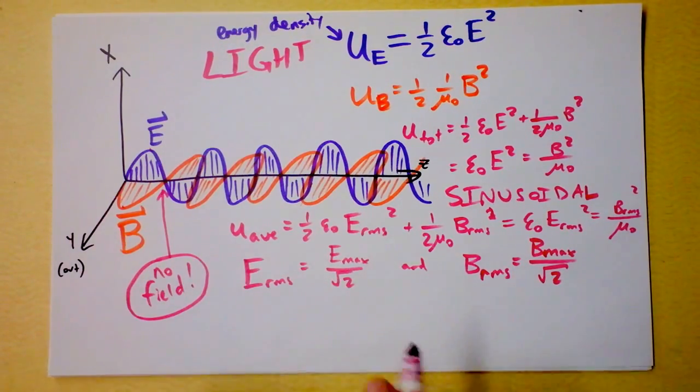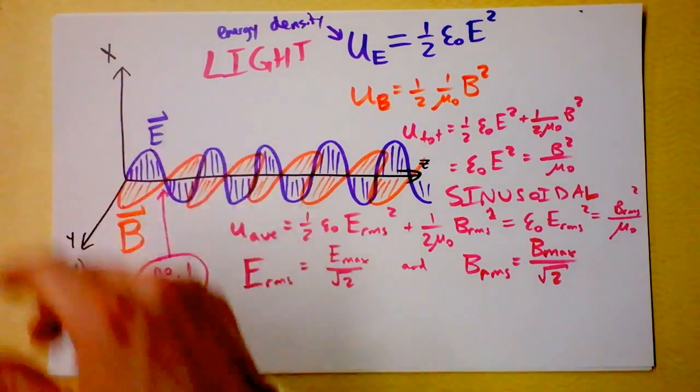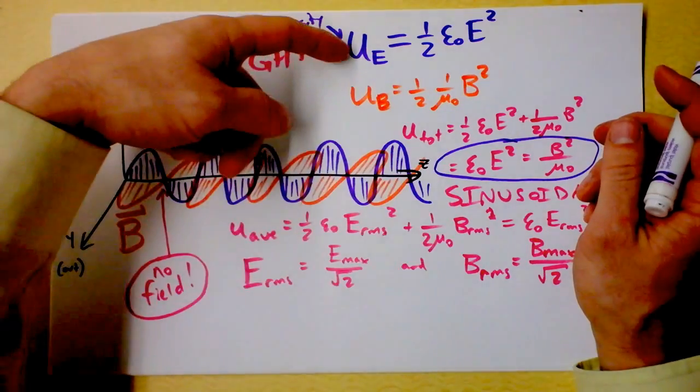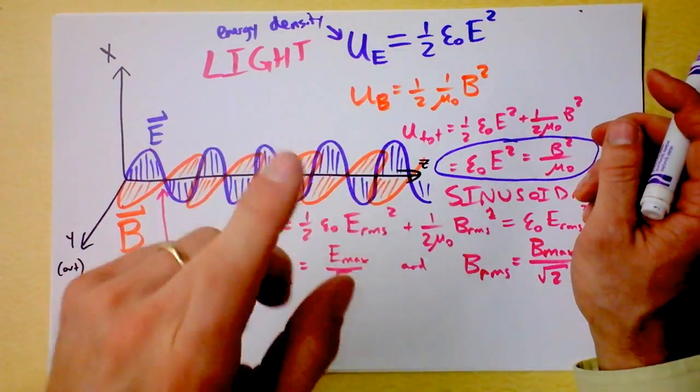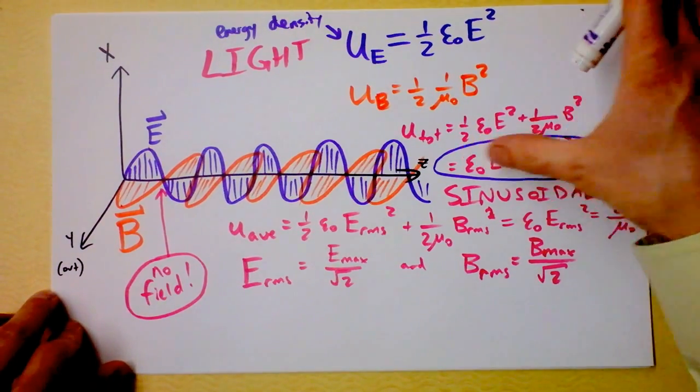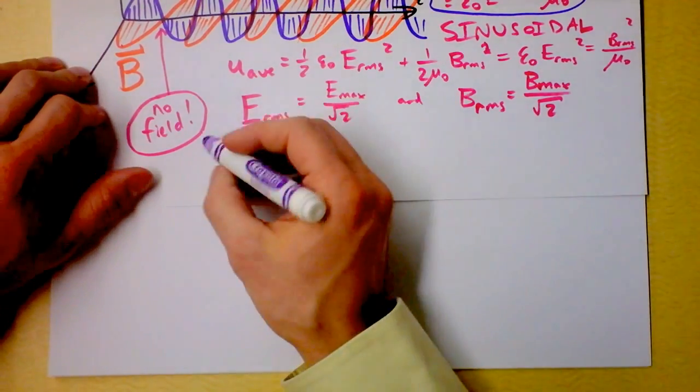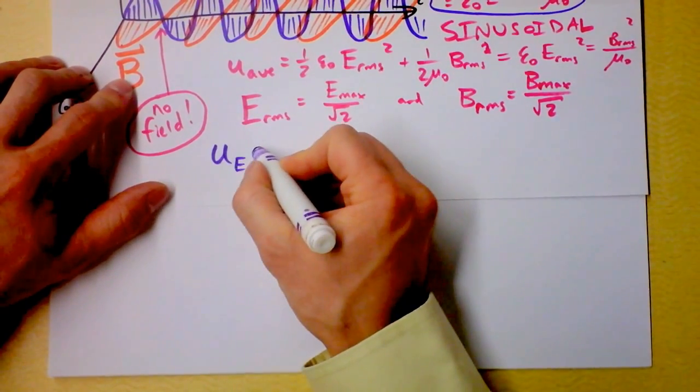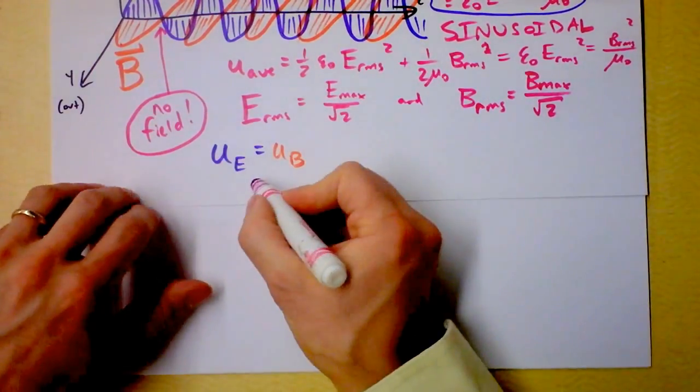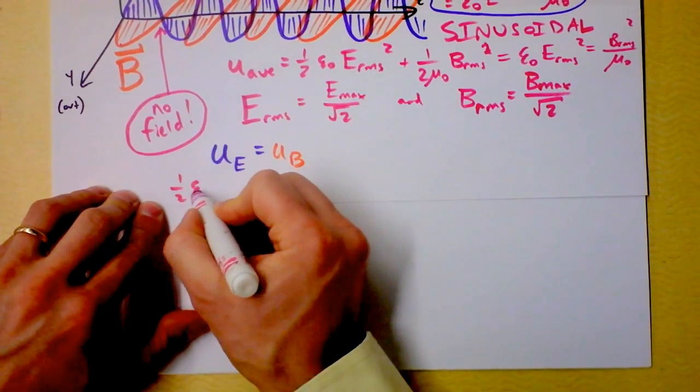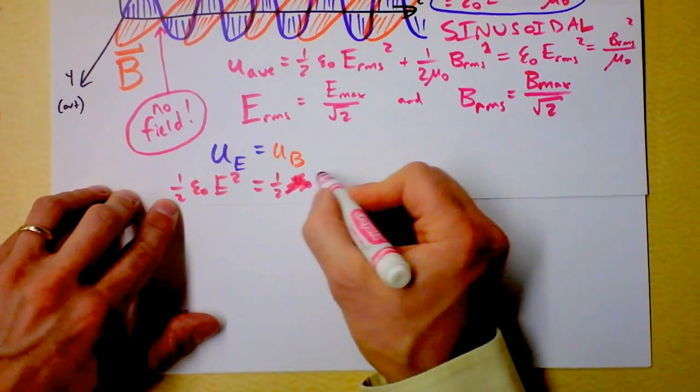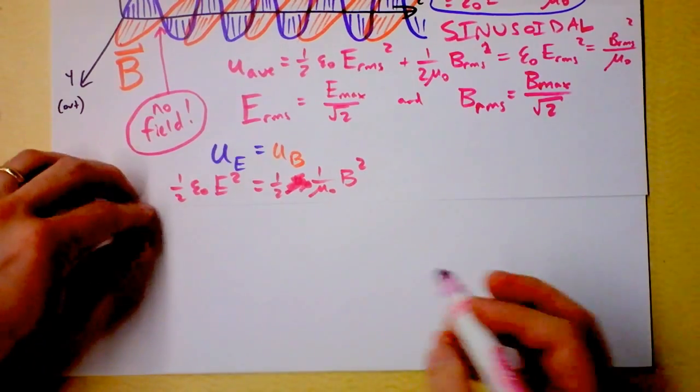The statement that the energy contributed by the electric field and magnetic field is equal gives us an amazing result. I'm saying the energy density of the electric field equals the energy density of the magnetic field. This is ½ε₀E² and this is ½(B²/μ₀). I can immediately cancel out the halves.